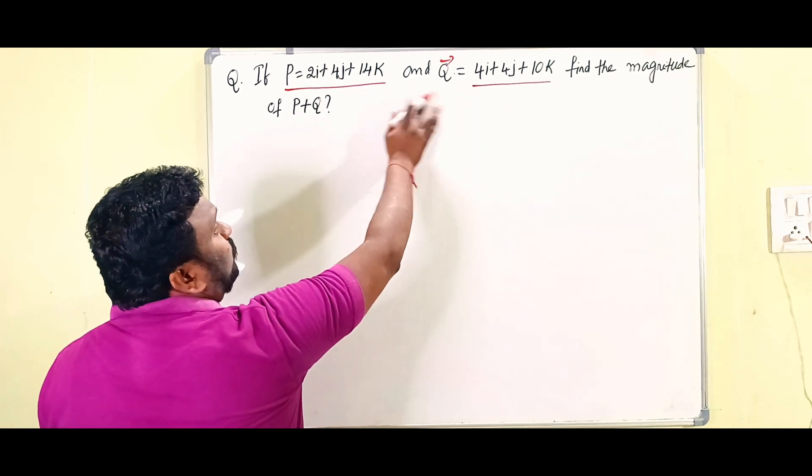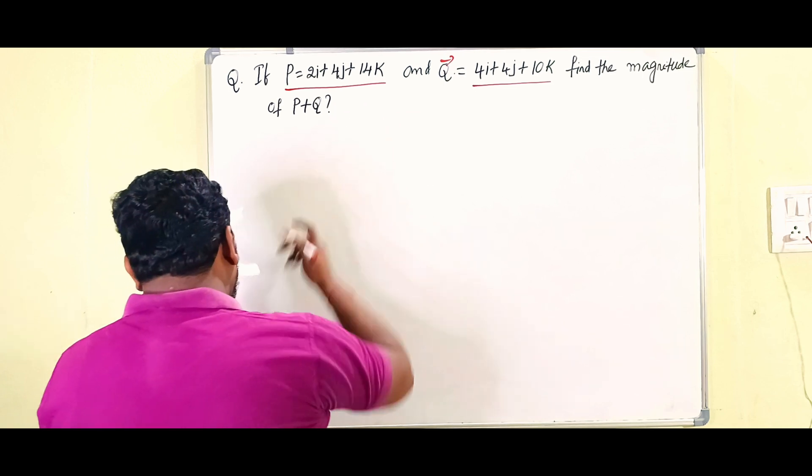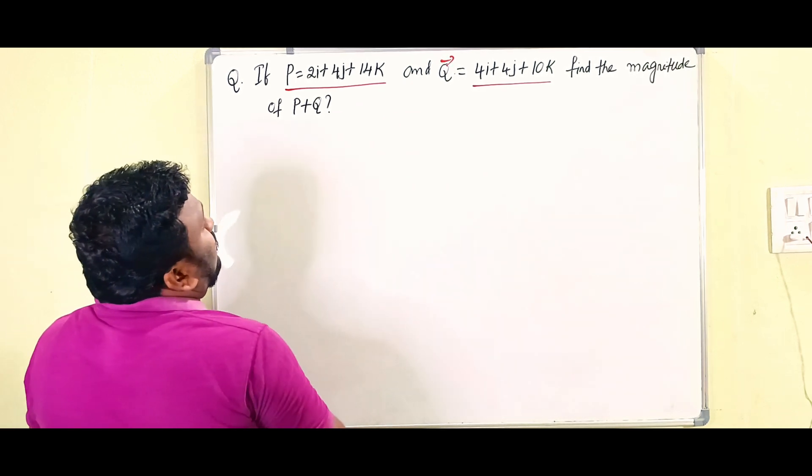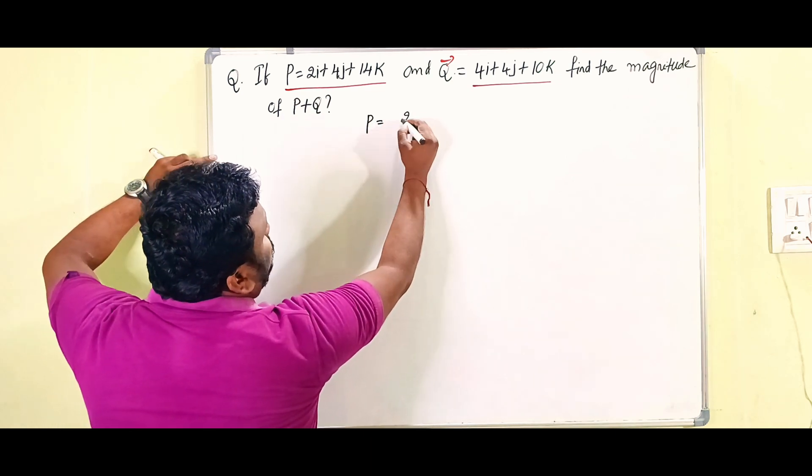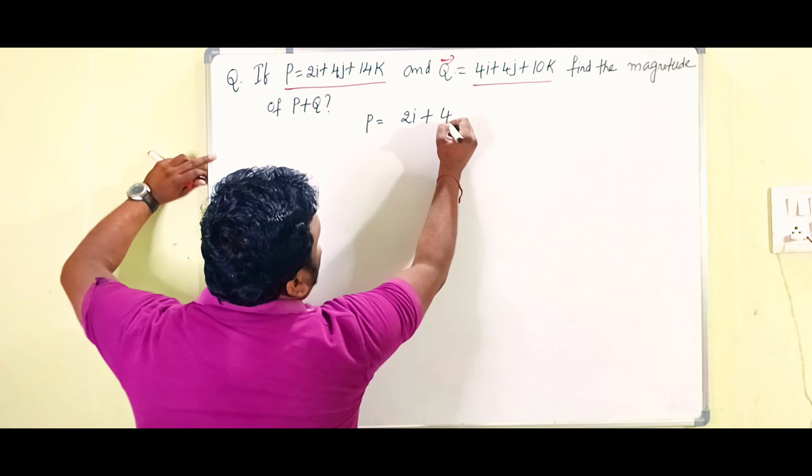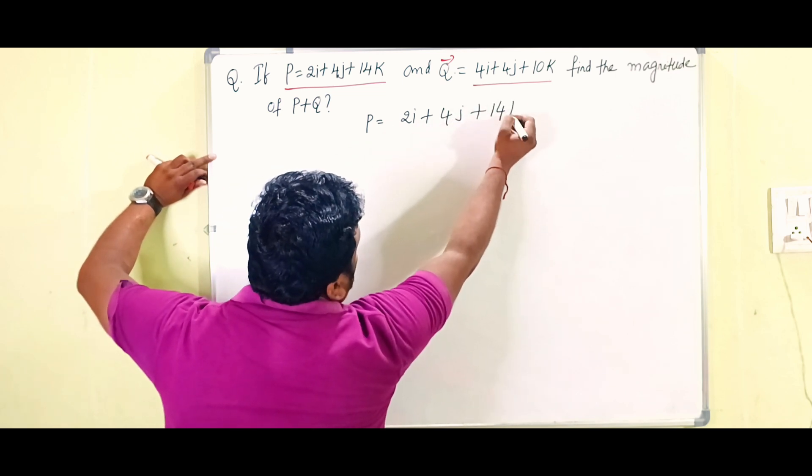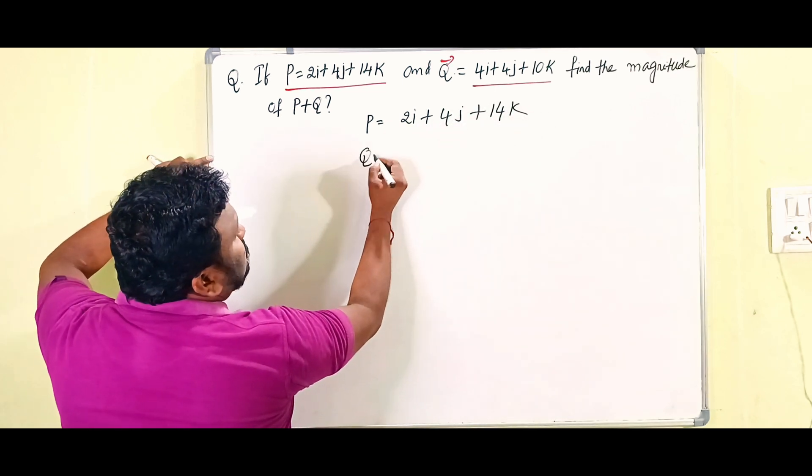So children, this is the most important question, watch very carefully. Here what is given: P is equals to 2i plus 4j plus 14k and Q is equals to 4i plus 4j and 10k.